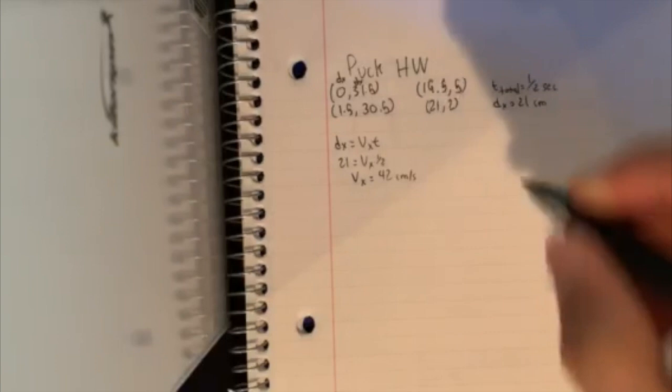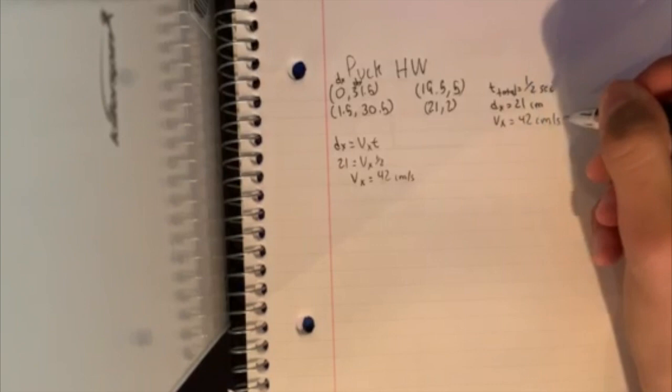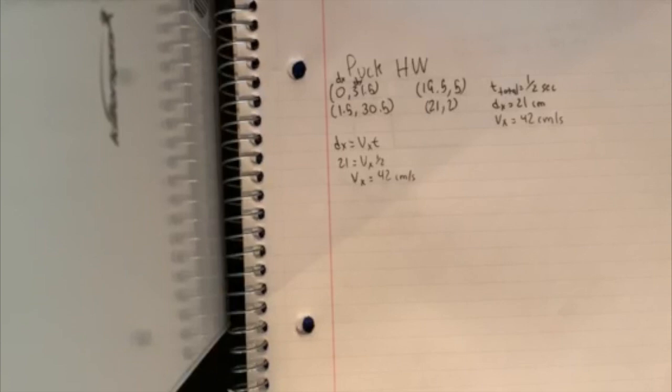I'm keeping everything in centimeters for now so I can have whole numbers, but at the end I'll convert to meters. And we know that the velocity in the x direction is constant, so that would make a of x zero.